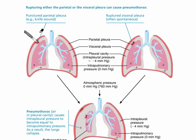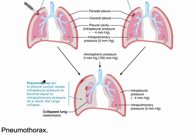Sometimes when there's a puncture to the lungs, as we see in this diagram — for example, a knife wound — the parietal pleura, the outer serous membrane, is punctured, rupturing either the parietal or the visceral pleura. As a result, air is found between the parietal and the visceral pleura. This can lead to a pneumothorax — air in the pleural cavity — that causes the intrapleural pressure to become equal to the intrapulmonary pressure, leading to a lung collapse. The term for lung collapse is atelectasis.